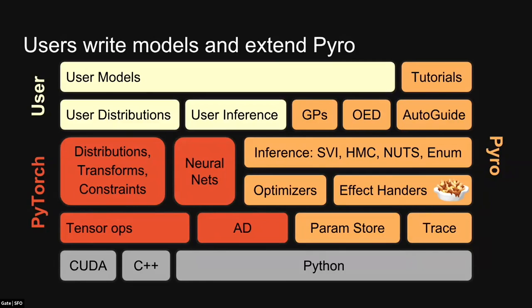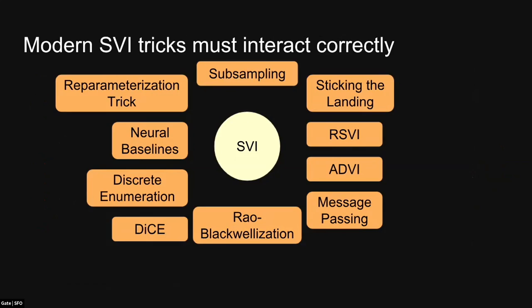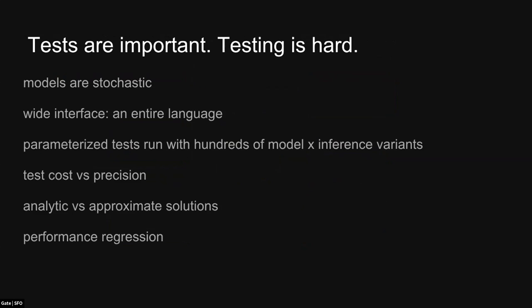This is a rough map of what the Pyro code base looks like. We work a lot with the PyTorch team and push a lot of code upstream. We also work with other teams — we've pushed code upstream to NetworkX and another library called Optine-sum. We have a lot of inference algorithms including an auto-guide library that provides automatic amortized inference algorithms, and then a host of other inference algorithms. The one we focus on most is stochastic variational inference, which combines a bunch of different tricks from the literature. Each of these is difficult to implement and especially difficult to get them to work together, which requires a lot of unit testing. JP is going to tell you about our unit testing infrastructure.